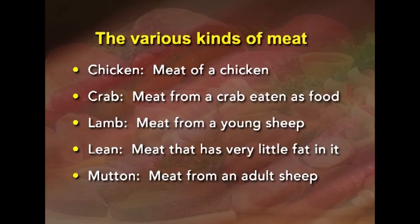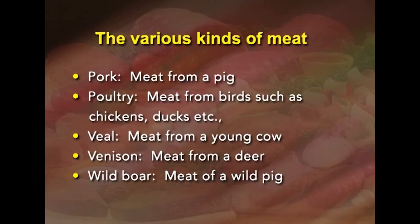Crab is meat from crab eaten as food. Lamb is meat from a young sheep. Lean meat is meat with very little fat content. Mutton is meat from adult sheep. Pork is meat from pig.